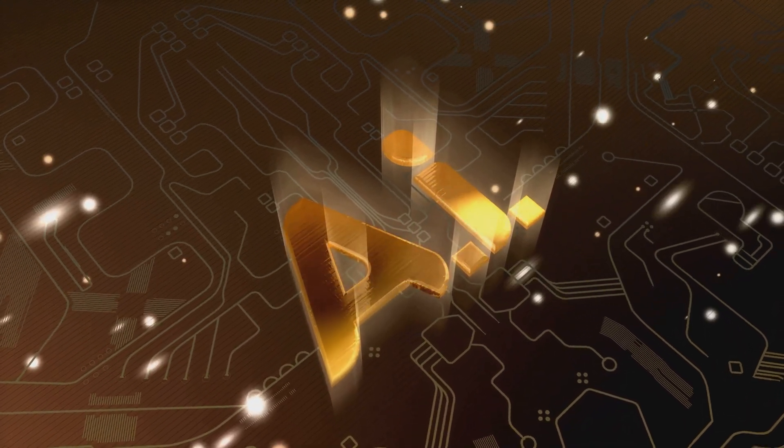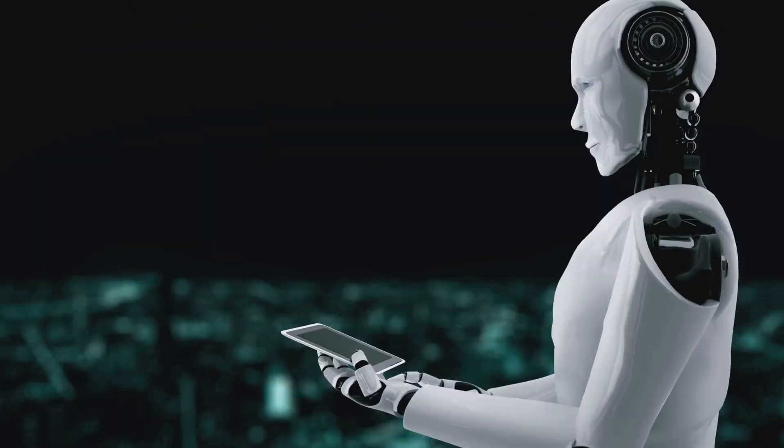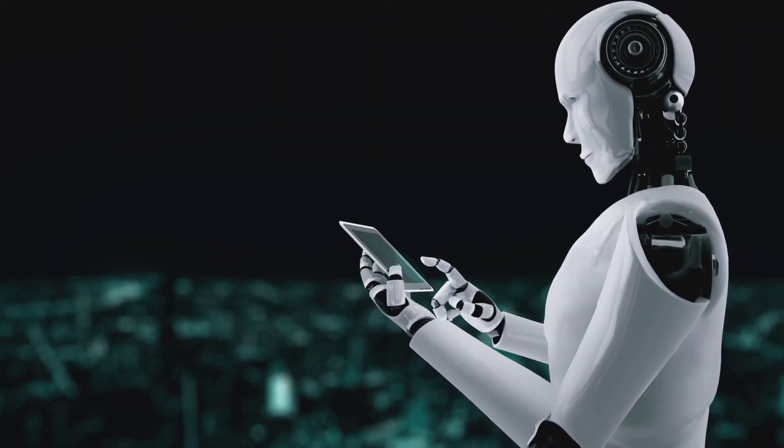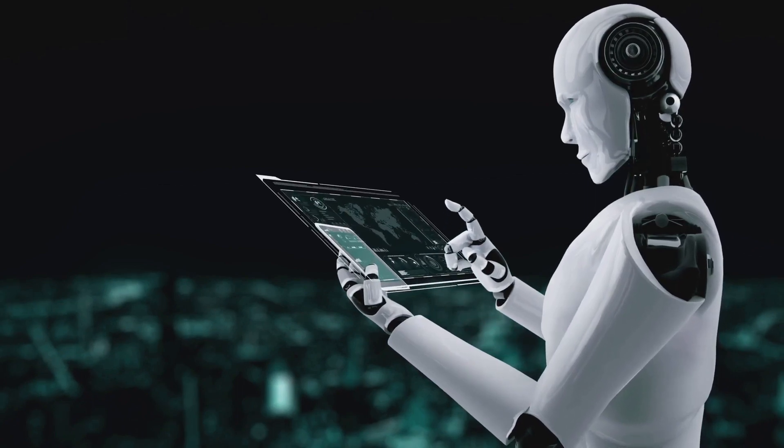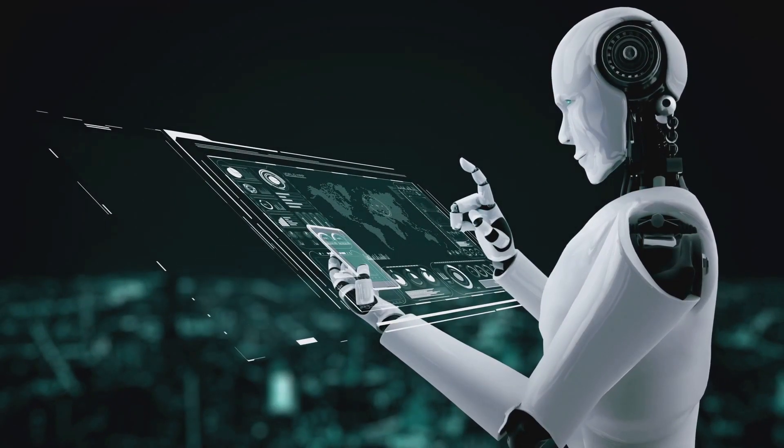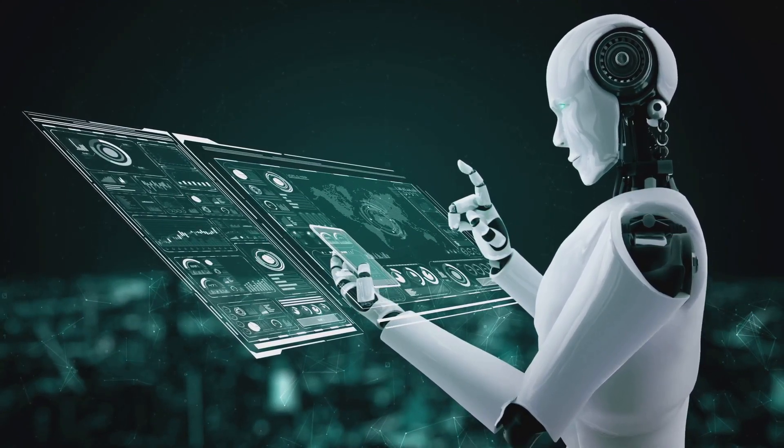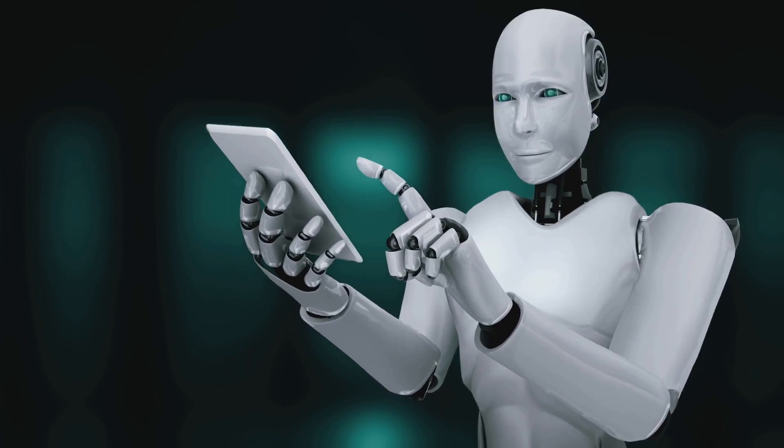Next up is the Internet of Things, or IoT for short. Imagine billions of devices, from your smartphone to your refrigerator, all connected to the internet, sharing data. This network of devices allows for advanced connectivity and automation. It's like having a global nervous system, connecting everything and everyone.